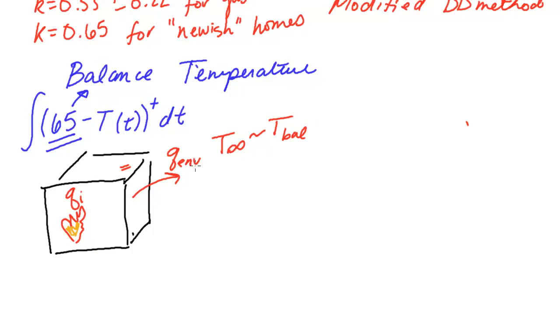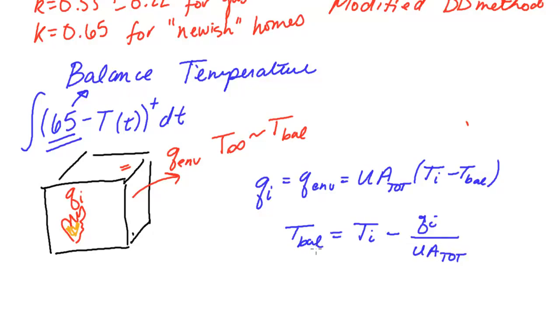So let's write this out. We're talking when the Q internal is equal to the Q envelope, which is equal to the UA value, the total UA value of the building, times T internal minus T balance. That's the, this is outside T balance. And so now we can just solve for the balanced temperature. And if you do a little bit of algebra, you'll find that the balanced temperature is equal to T_I minus Q_I over UA total. So there you go. There you have it. Now we have a new balanced temperature.